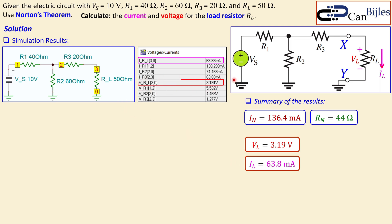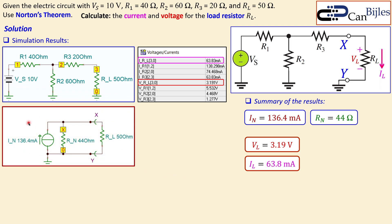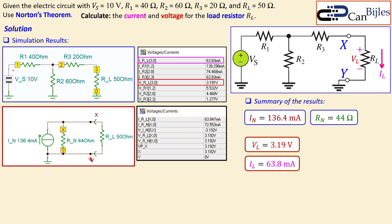The simulation also shows V_RL ≈ 3.19 volts, very close to our calculated value. We then simulate the Norton equivalent circuit: a current source of 136.4 mA in parallel with 44 ohms, with RL connected between nodes X and Y. The simulated I_RL is approximately 63.85 mA — very close to the original circuit, with the small difference due to rounding.